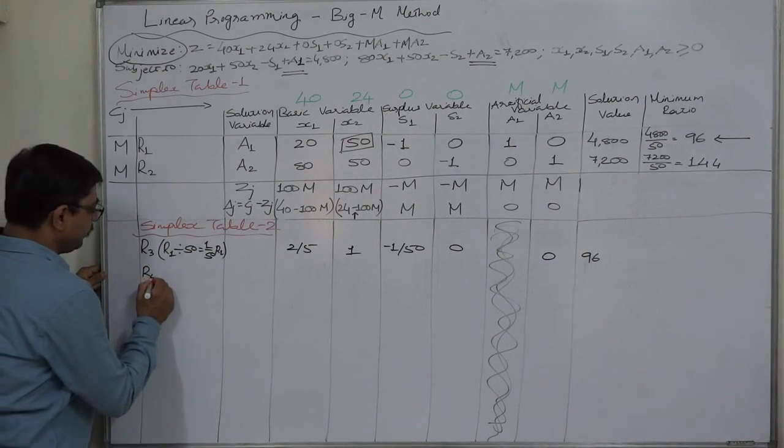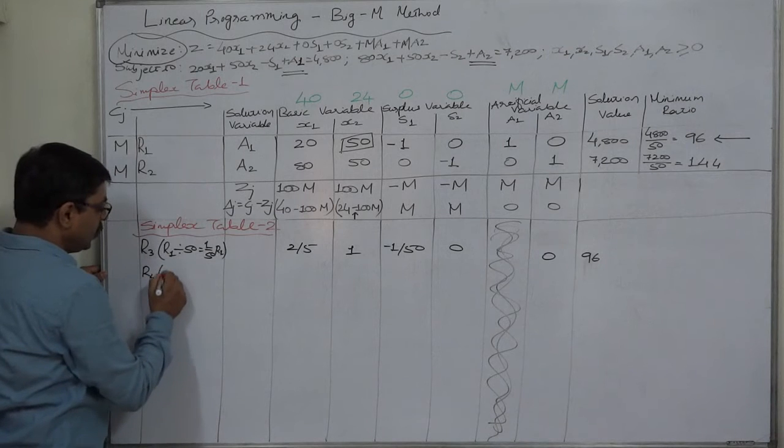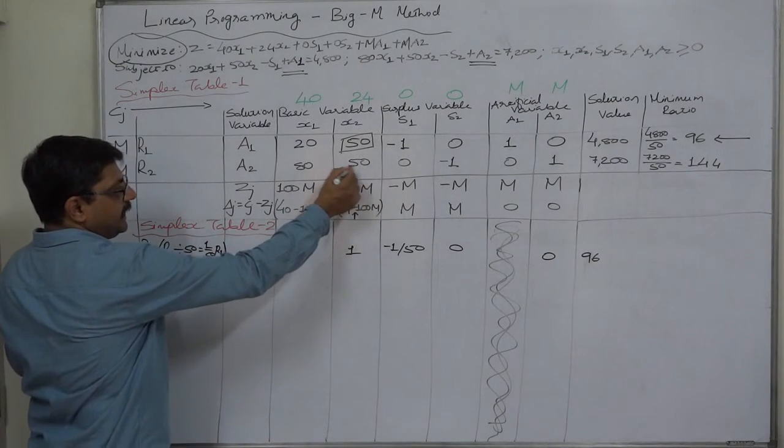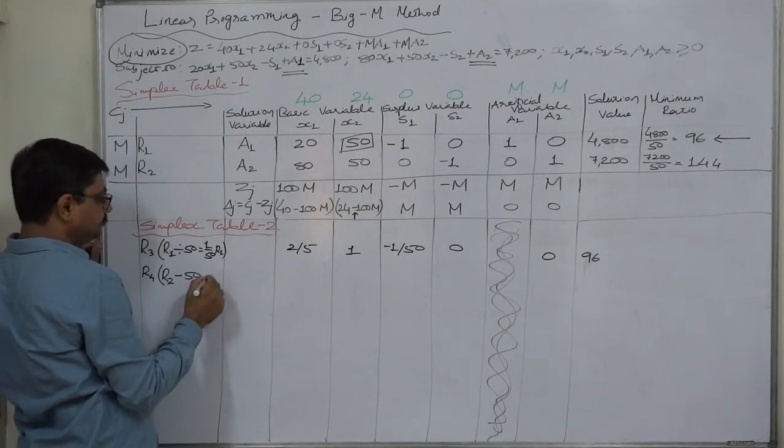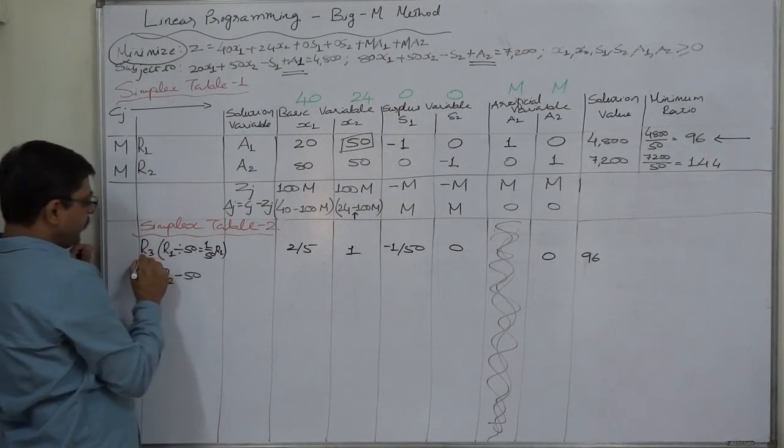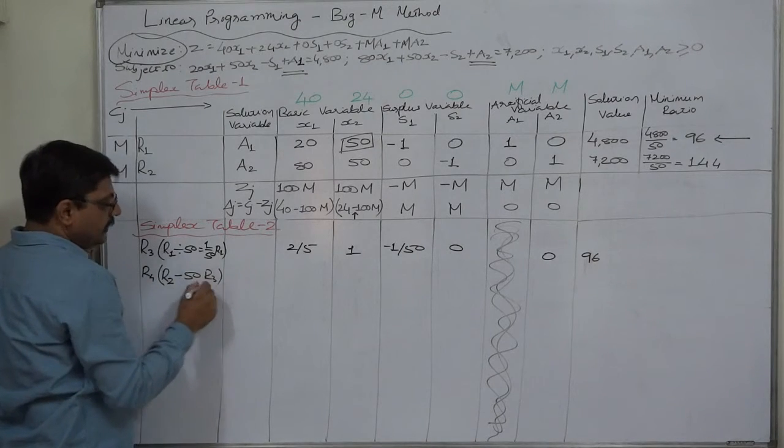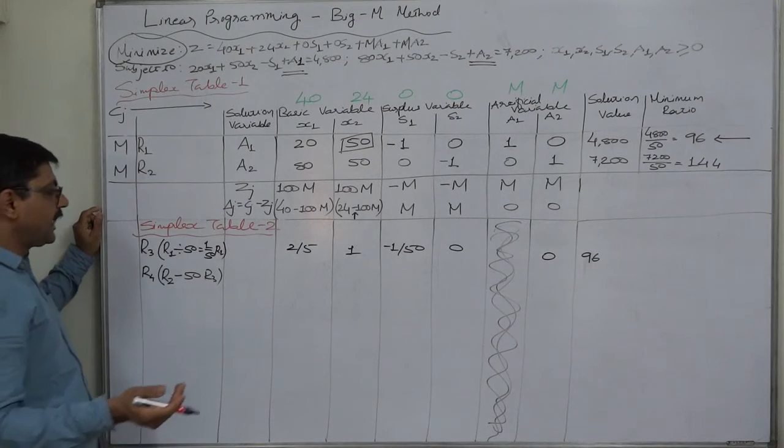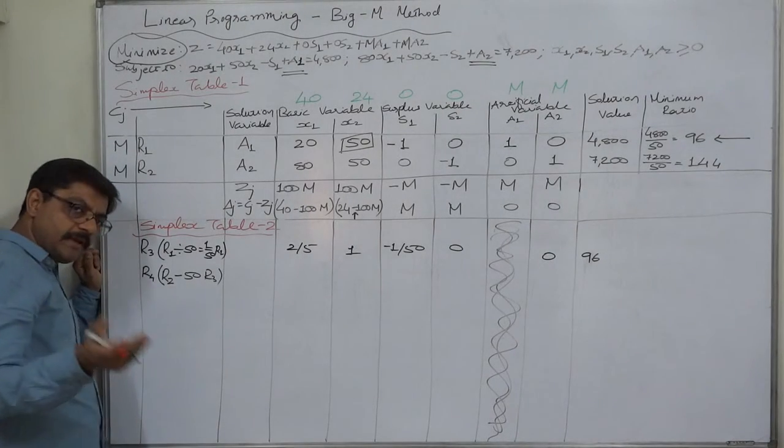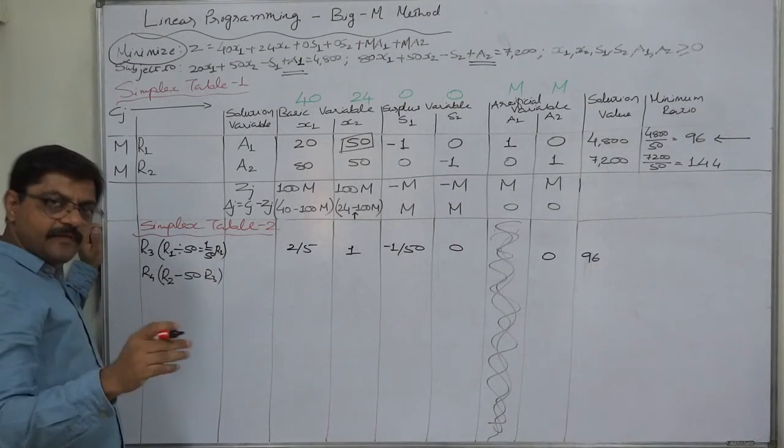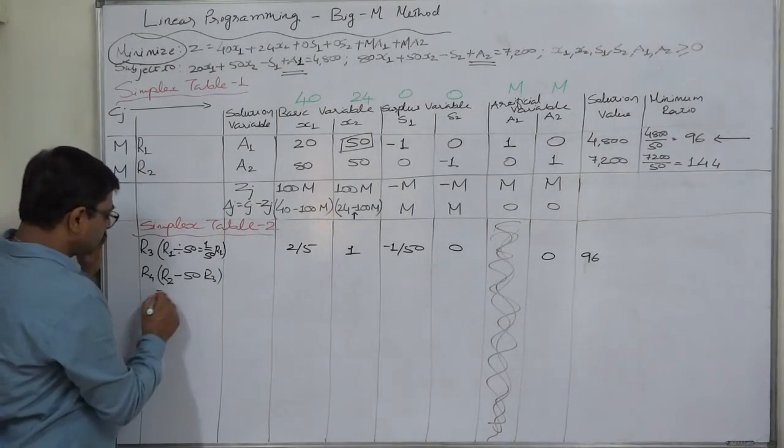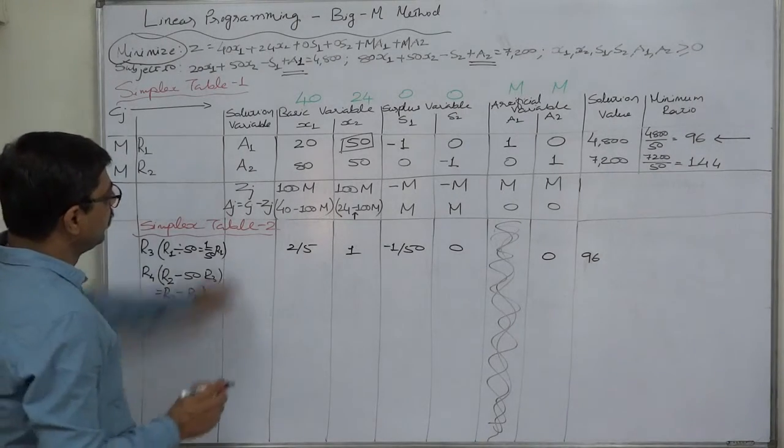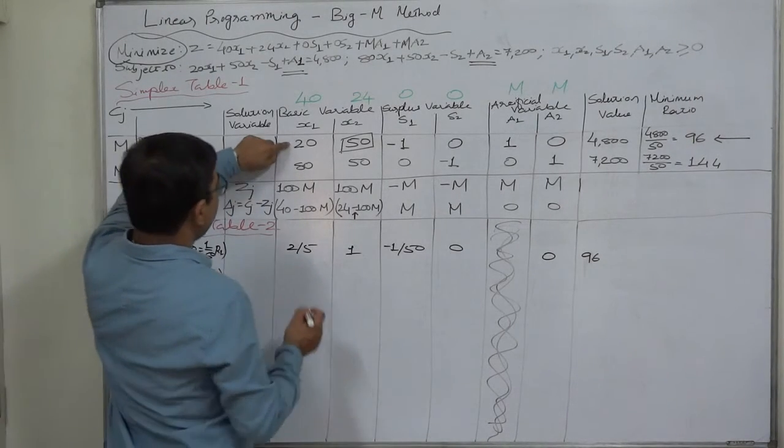Old row minus the element in the key column in the same row, 50, into replaced row r3. Now we know that r3 itself is the result of r1 divided by 50. So if we multiply r3 again by 50, it will be r1. So ultimately the formula is r2 minus r1, a very easy formula. R2 minus r1.